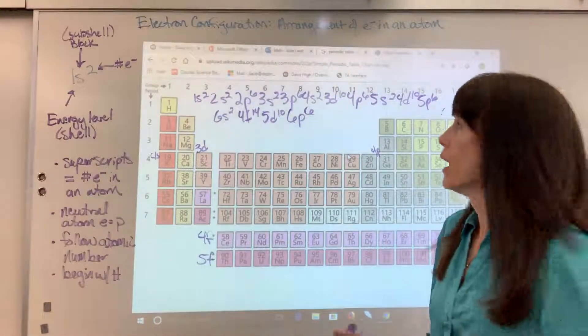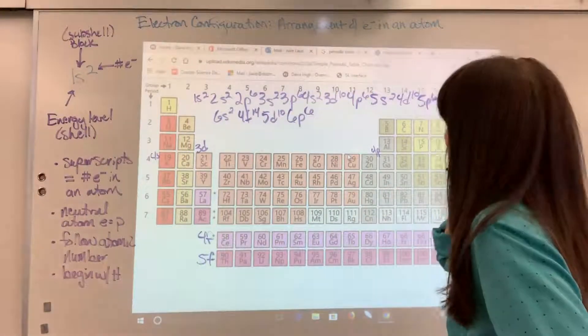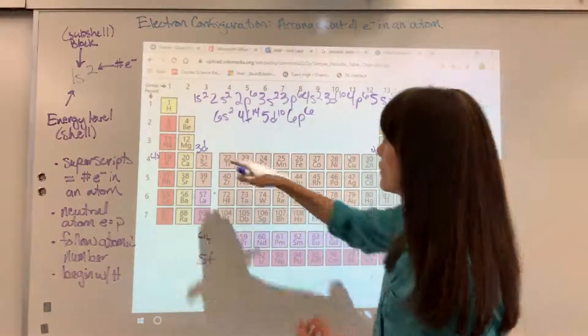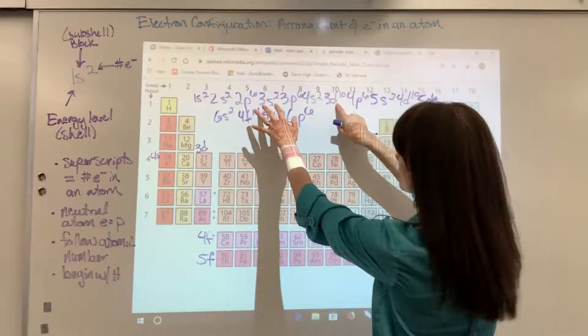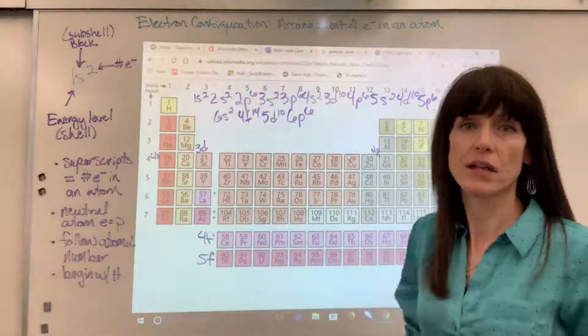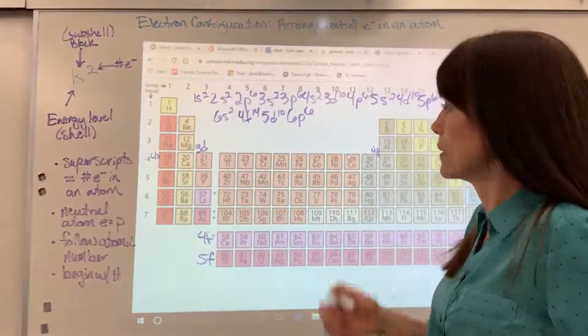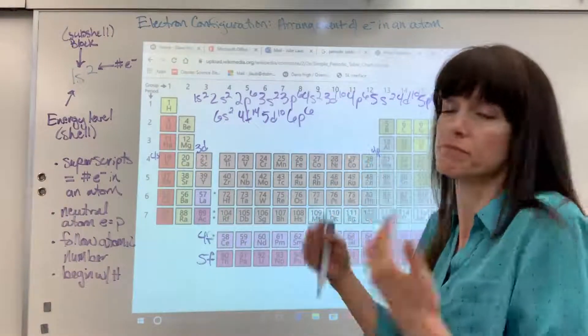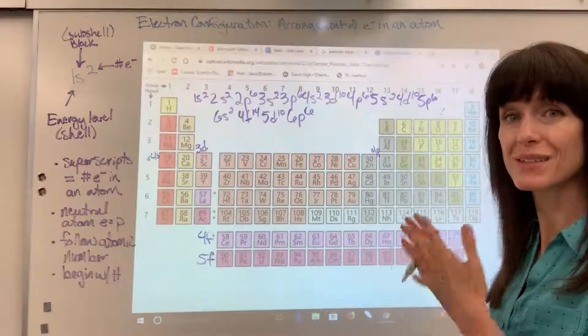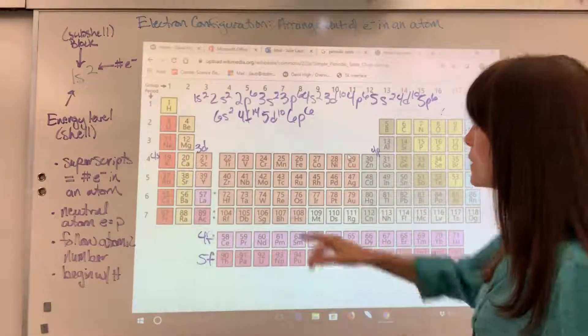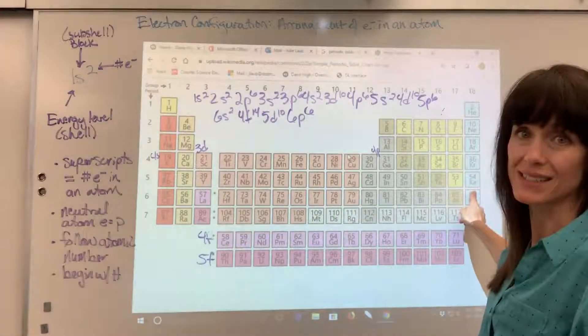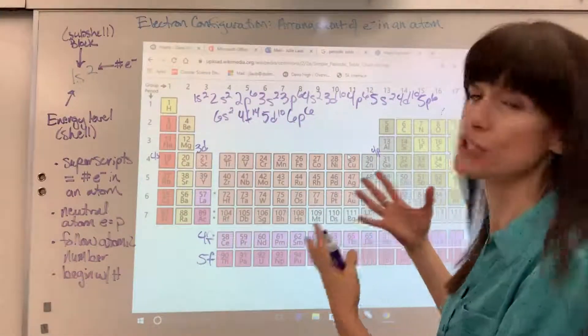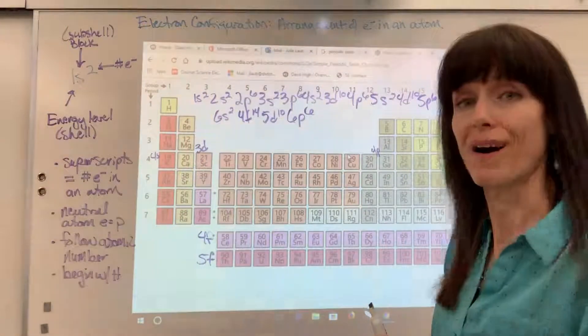Now, another thing that I want to show you, sometimes you'll see electron configurations written where they would maybe have all the ones together, all the twos, all the threes. So they'd actually move 3D over here, all the fours together, then all the fives, all the six energy levels. It's fine. Writing it this way, it's just showing the electron configuration. You can write it either way. If you see it written with the energy levels all together, not a big deal. So there's the pattern of how electrons fill. Just a reminder, if we added up all those superscripts, they would equal 86, shows where every single electron exists. Those 86 electrons, their energy levels and their shapes, the block, the subshells, where every electron goes, they all have an address. Electron configuration.